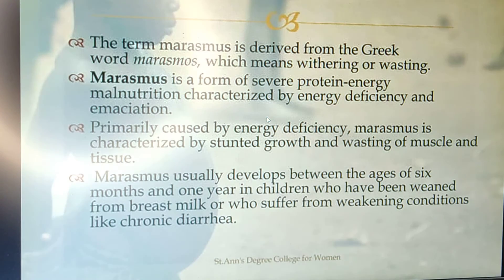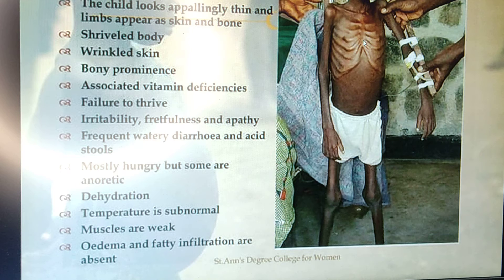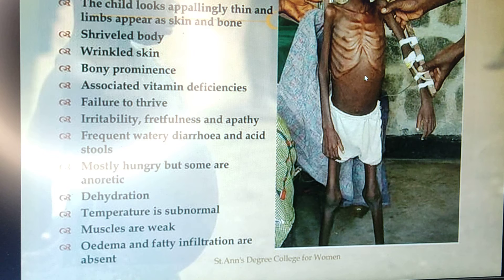Marasmus is also a calorie deficiency and falls under protein energy malnutrition. As seen in this picture, the child has severe growth retardation, severe muscle wasting, no subcutaneous fat, and prominent rib bones that can be counted. There is loss of subcutaneous fat leading to wrinkling of the skin, giving the child an old-man appearance. The child shows restlessness and irritability, sometimes hunger and sometimes anorexia, and diarrhea.